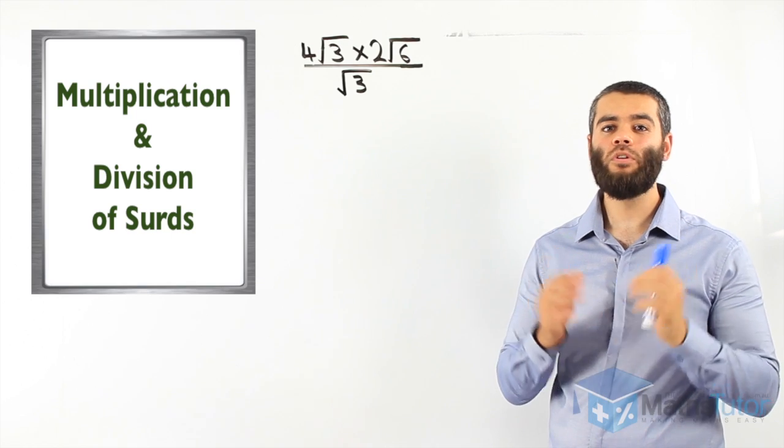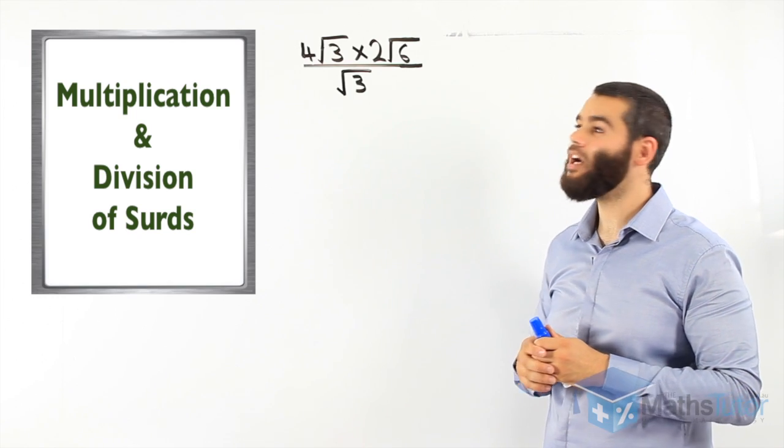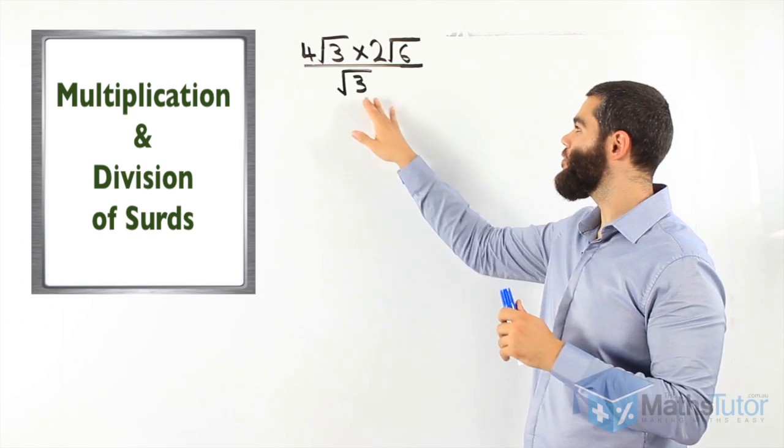Hey everyone! How will you solve a problem like this, when you have 4 root 3 times 2 root 6, all over root 3?